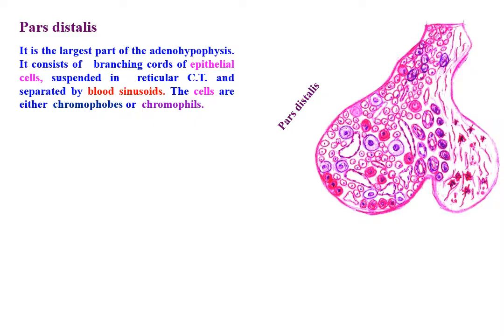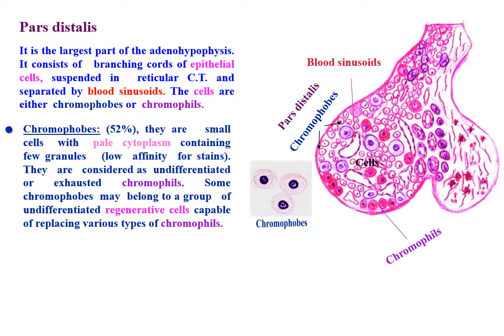Pars distalis is the largest part of the adenohypophysis. It consists of branching cores of epithelial cells suspended in reticular connective tissue and separated by blood sinusoids. The cells are either chromophobes or chromophiles. Chromophobes, about 52%, are small cells with pale cytoplasm containing few granules and have low affinity for stains. They are considered undifferentiated or exhausted chromophiles, though some may be regenerative cells capable of replacing various types of chromophiles.